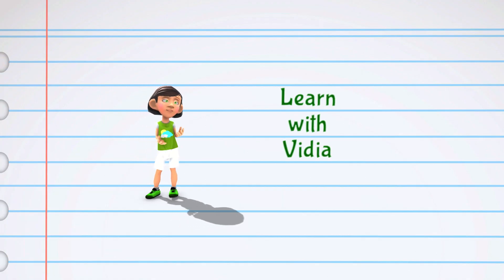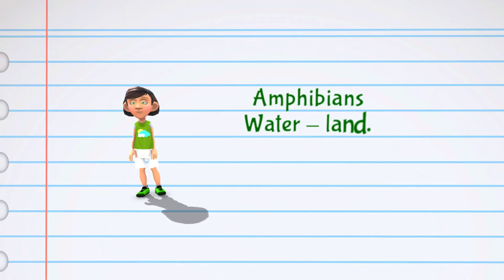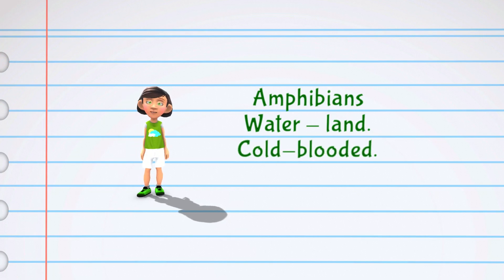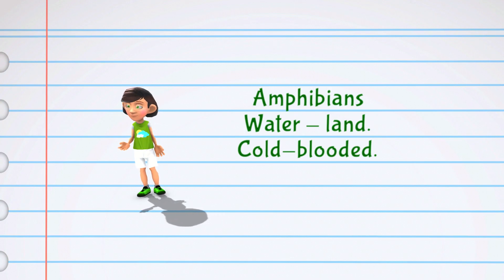Today we are going to learn about amphibians. Amphibians are a group of animals that spend part of their lives in water and part on land. They are cold-blooded, which means their body temperature changes with the temperature of their environment.